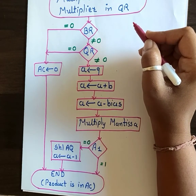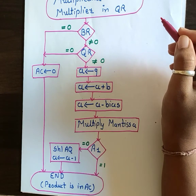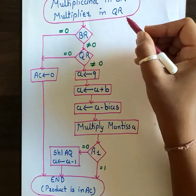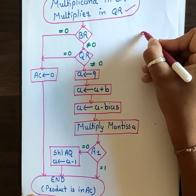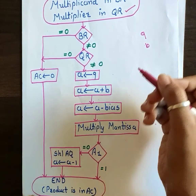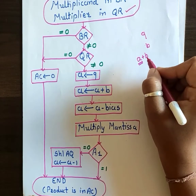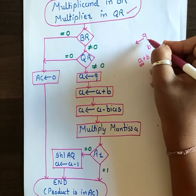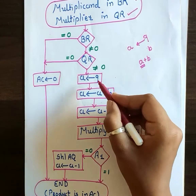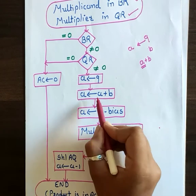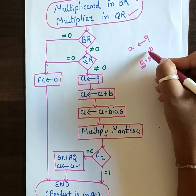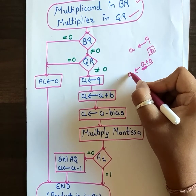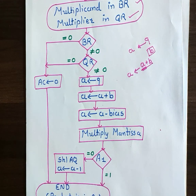After checking for zero, we add the exponents. The exponent for QR (the multiplier) is stored in Q, and the exponent for BR (the multiplicand) is already in register B. We transfer the value from Q to A, then perform A plus B and store the result back in A. After that, we subtract the bias number from A.